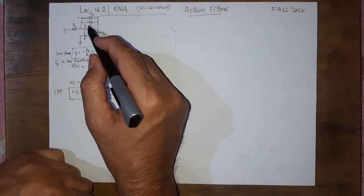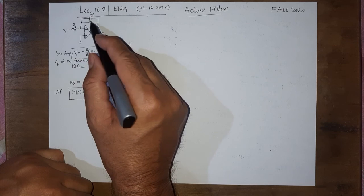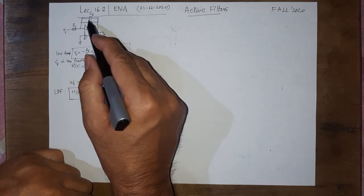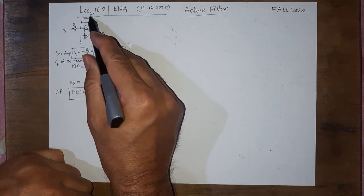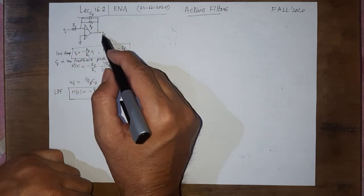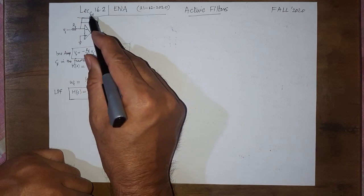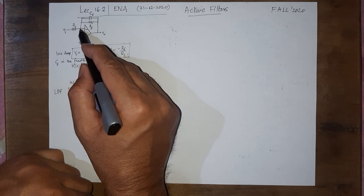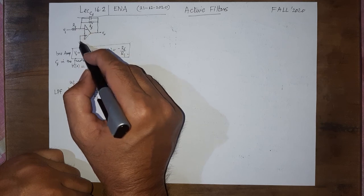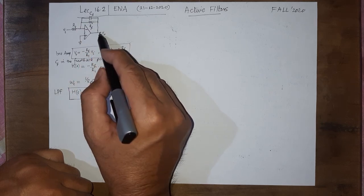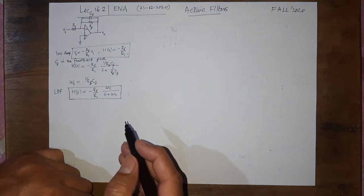We can also argue qualitatively that this is a low pass filter. When omega is 0, 1 over 0 is infinity — the capacitor is open and the input passes to the output. When omega is infinity, 1 over infinity is 0 — the capacitor is a short, so the virtual ground makes the output 0 as well. This confirms it is a low pass filter.